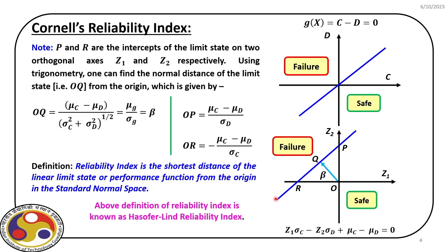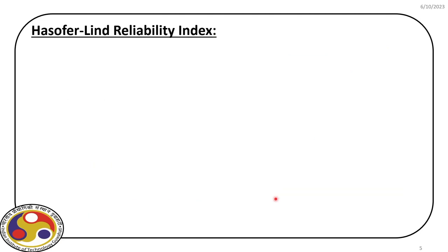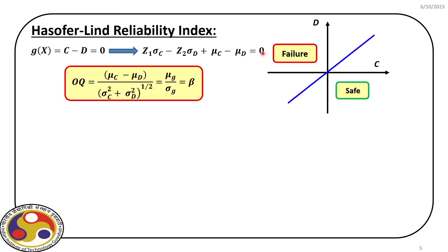This definition was first proposed by Hasofer and Lind, and therefore we call it the Hasofer-Lind Reliability Index. We start from gx equal to 0 and convert it into standard normal space to get gz equal to 0, then find the expression of the limit state in standard normal space and determine the optimal distance.